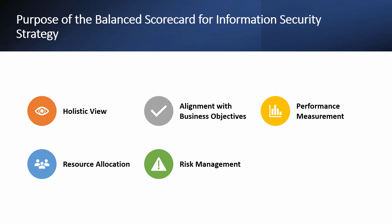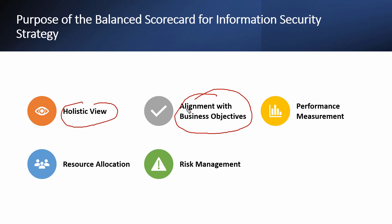Now let's talk about the purpose of the Balanced Scorecard — to balance and provide value for the information security strategy. The first purpose is a holistic view: the Balanced Scorecard provides a comprehensive view of the organization's information security posture, encompassing financial, customer, internal process, and learning and growth dimensions. Second, because we have a Balanced Scorecard, we can align better with business objectives, ensuring information security initiatives align with broader business objectives and that security does not operate in silos but supports the overall business strategy.